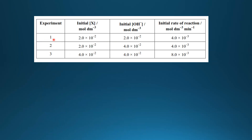Let's look at one more example. Here we have the initial concentration of X and OH⁻ and the initial rate of reaction. We look for an experiment where one changes and one stays the same. For the concentration of X, in experiments 2 and 3, it's doubled while OH⁻ stays the same, and the rate doubles. For OH⁻, in experiments 1 and 2, we double the concentration of OH⁻ while X stays the same, and the rate stays the same too — so there's no effect of doubling the concentration of OH⁻.